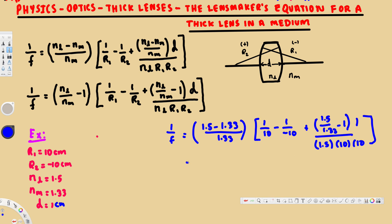If you calculate this, you should get f equals 35.29 centimeters. So you can see that the focal length changes according to the medium.